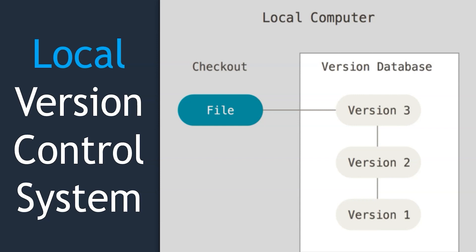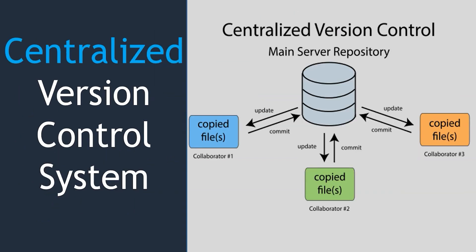But a local version control system only works if you are a single developer and don't need to collaborate with a team — it doesn't solve the problem of working with a group of people. In a centralized version control system, you have a centralized main server repository. Collaborators and developers communicate with this main server repository to write code, and there is no local copy of the project. If the centralized repository is not accessible, developers cannot write code.